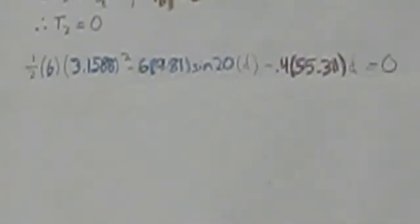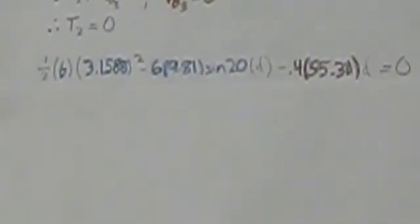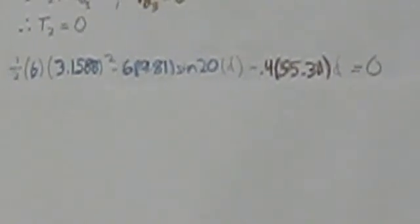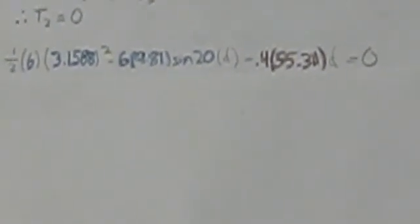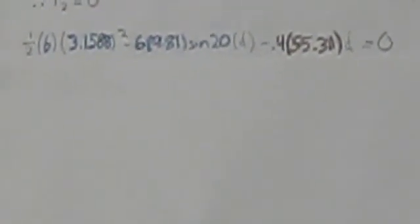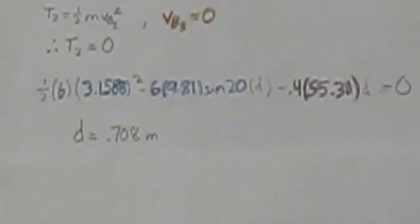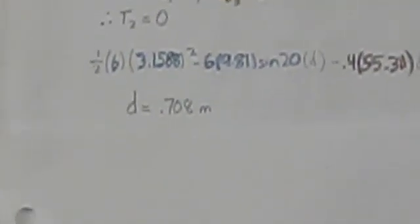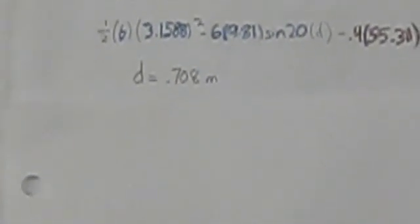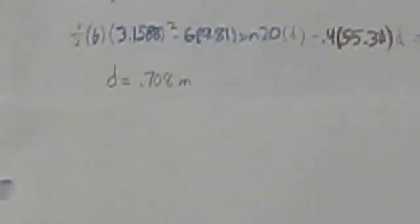With everything figured out, we apply the equation: 0.5 × 6 × 3.1588² − 6·9.81·sin20°·d − 0.4·55.31·d = 0. After solving, the distance the block slides back up the ramp after impact is 0.708 meters.